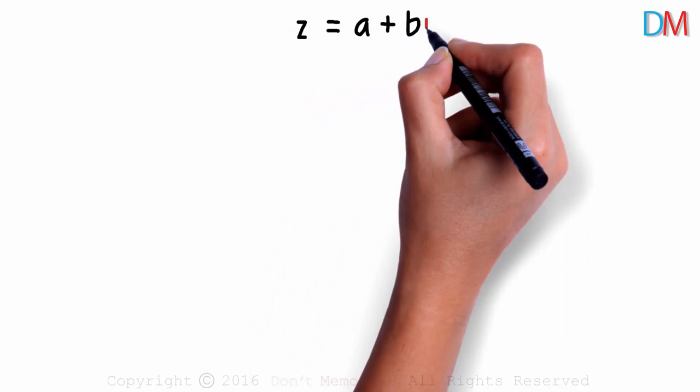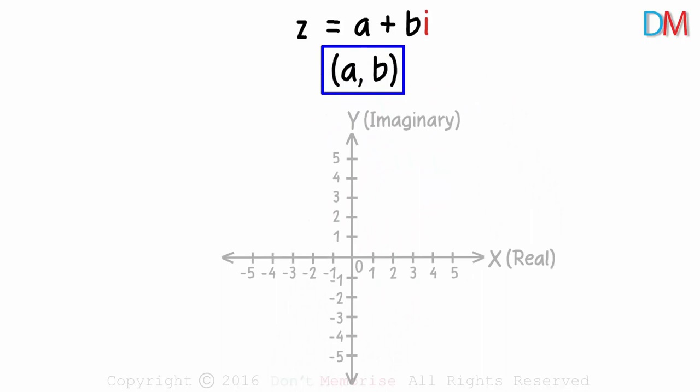A complex number z equals a plus bi is simply written as a comma b. And this can be represented on an Argand plane.